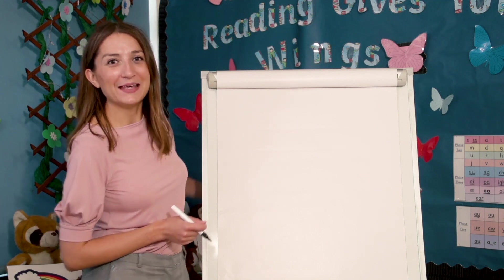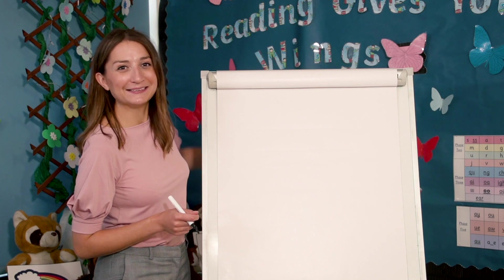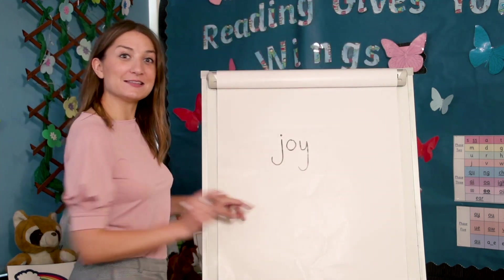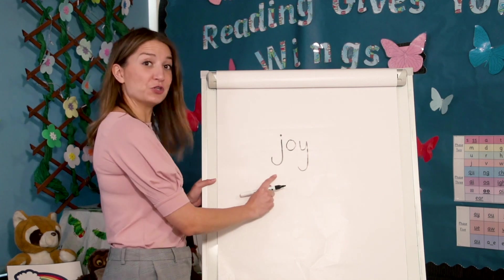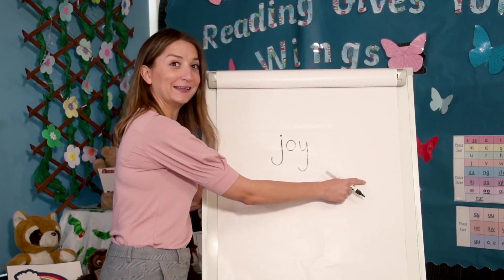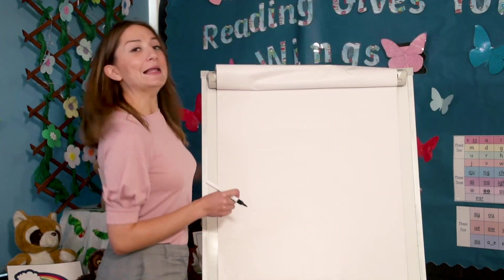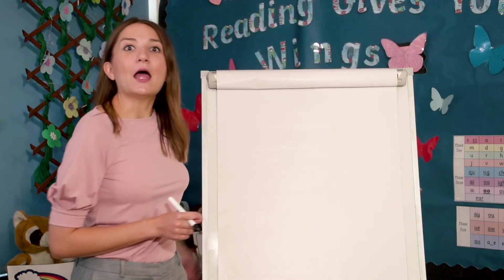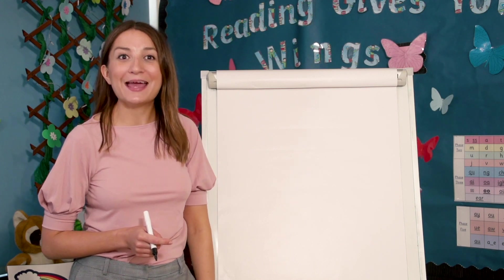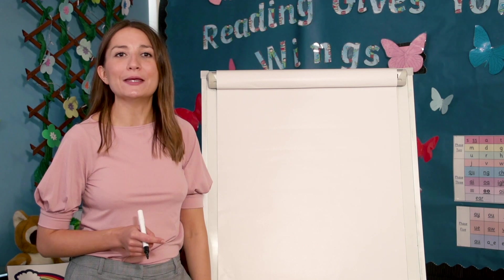Okay, let's check our spelling. Show me your spelling. Did you get it right? Joy. Okay, let's try another. Let's spell annoy. Segment the sounds with me — annoy. Annoy.